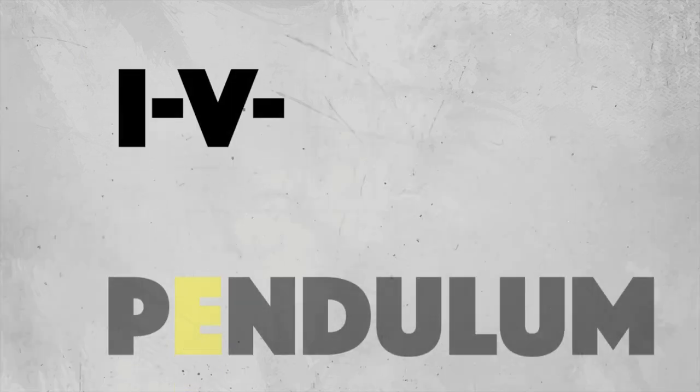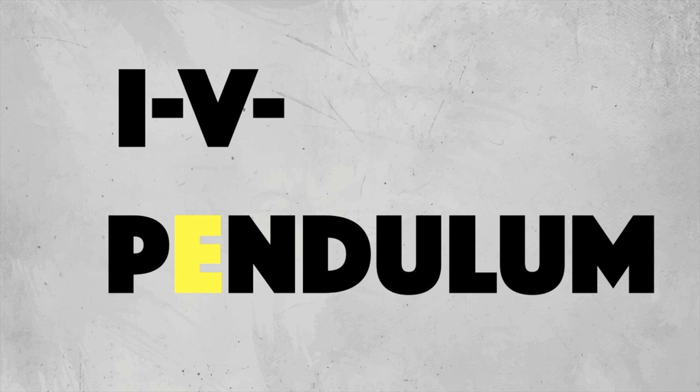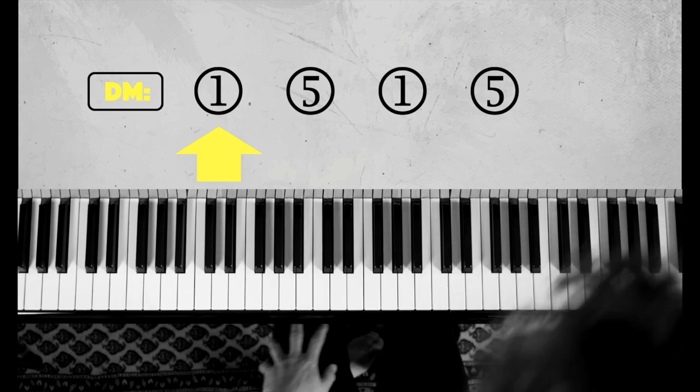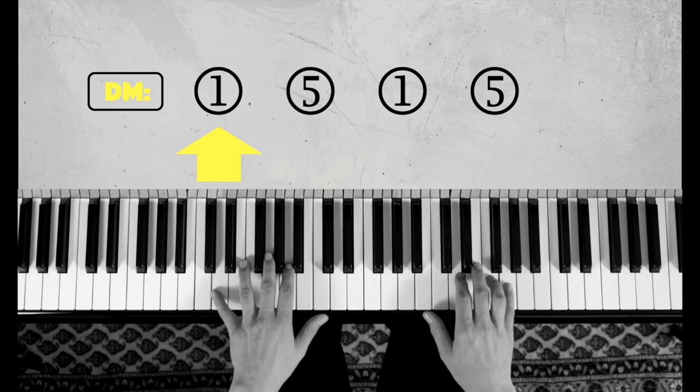Well, enough on that, let's just check out another opener. For example, the 1-5 pendulum. Here's a little prelude to demonstrate how this opener reappears on the 5 to create a simple musical form.